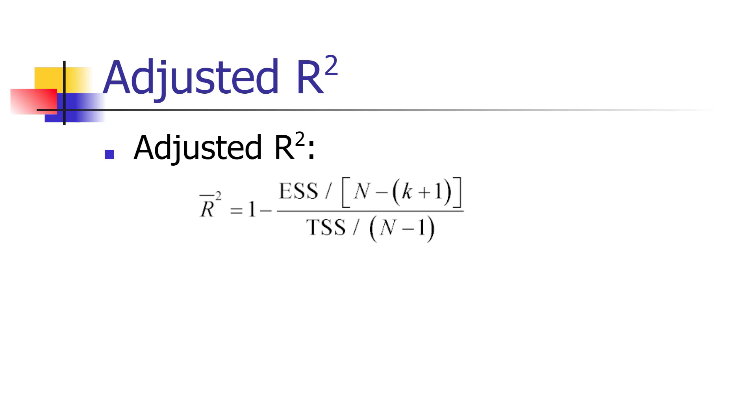But what happens in small samples particularly, we're adding a penalty there, where the number of variables included in the regression, k, rises. If we look at that numerator ratio, the denominator of the numerator ratio will change. In particular, as k goes up, the quantity n minus k plus 1 will go down.